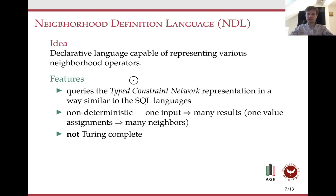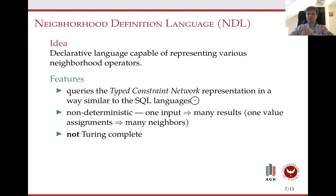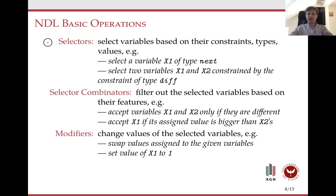Given this type-constraint network, we want to propose a language — a neighborhood definition language, NDL — that is able to query the type network similarly to the way we query databases using SQL. It should be non-deterministic, so for one input we get many results: for one value assignment, we get many neighbors. This language is not complete, but it is designed so that it would be easy to automatically process.